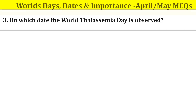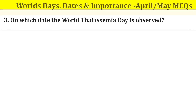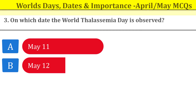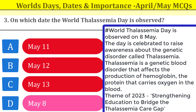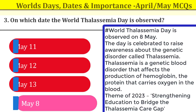Question number three: on which date is World Thalassemia Day observed? World Thalassemia Day is on 8th May. The day is celebrated to raise awareness about the genetic disorder called thalassemia. Thalassemia is a genetic blood disorder that affects the production of hemoglobin, the protein that carries oxygen in blood. The theme of 2023 was 'Strengthening Education to Bridge the Thalassemia Care Gap.'